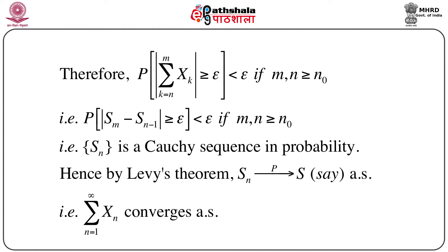We can write the summation x_k from k equals n to m as S_m minus S_{n-1}. So the probability that the modulus of S_m minus S_{n-1} is greater than or equal to epsilon is less than epsilon. That means the sequence S_n is a Cauchy sequence in probability. Applying Levy's theorem, S_n converges in probability to S, and hence S_n converges to S almost surely. That means the summation x_n converges almost surely. This completes the proof of Kolmogorov's convergence theorem.